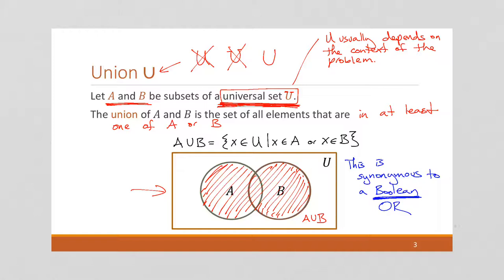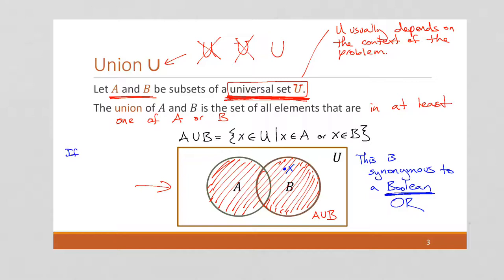So if some element x is in A or x is in B, so let's write this. If x is an element of A or x is an element of B, then x is an element of A union B. And I guess that's really what this line is saying as well. Okay? So that's union.